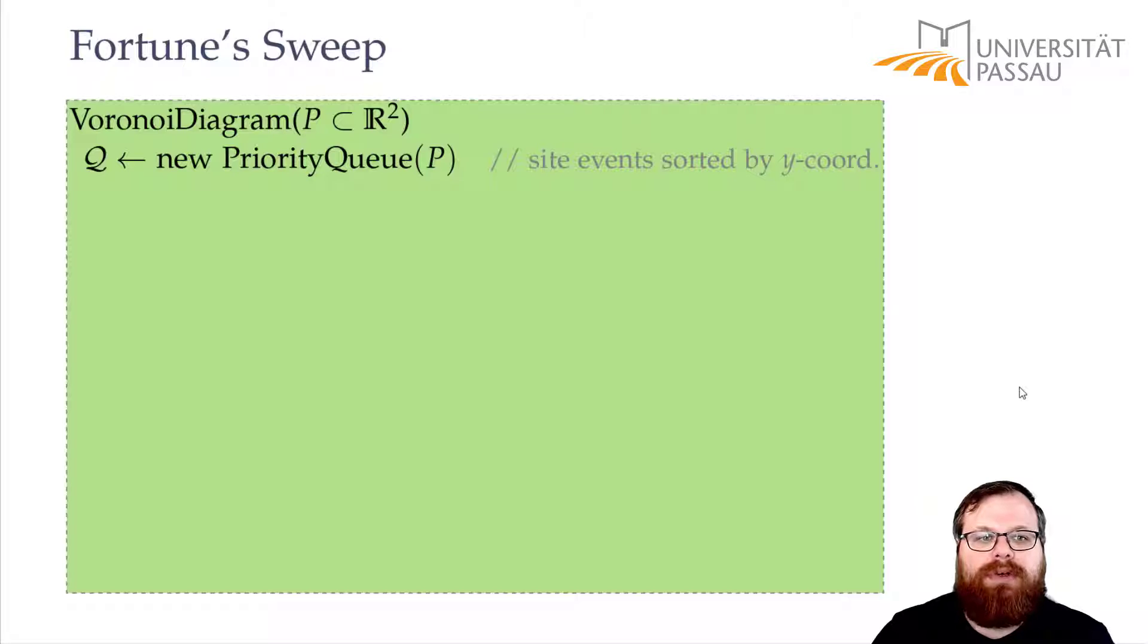The algorithm to compute the Voronoi diagram is very similar to the sweep line algorithm we had in Lecture 2. So we start with a priority queue that has all the site events in the beginning sorted by y-coordinate.